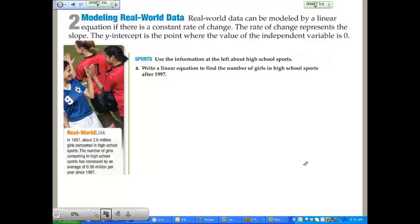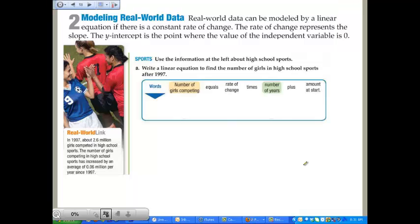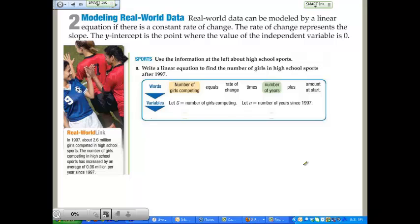This athletic problem says in 1997, about 2.6 million girls competed in high school sports. The number of girls competing in high school sports has increased by an average of 0.06 million per year since 1997. Use the information to write a linear equation to find the number of girls in high school sports after 1997. 1997 is your baseline year. We're going to say the number of girls competing equals the rate of change times the number of years plus the starting amount.